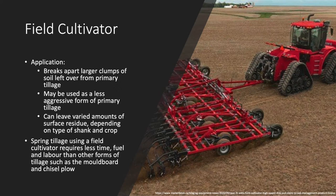Application of a field cultivator typically occurs in the spring to assist with breaking apart larger clumps of soil left over from primary tillage, and can control weeds and incorporate residues and fertilizers prior to planting. However, a field cultivator might potentially be used as a form of primary tillage that is less aggressive than other implements. The degree of residue incorporation can vary depending on the type of shank equipped as well as the type of crop residue. Additionally, spring tillage using a field cultivator requires less time, fuel, and labor than other forms of tillage such as the moldboard and chisel plow.